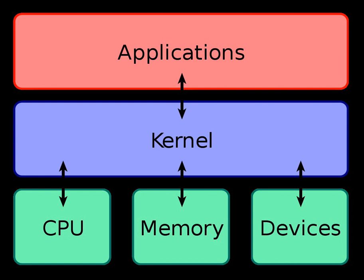The kernel has full access to the system's memory and must allow processors to safely access this memory as they require it. Often the first step is virtual addressing, usually achieved by paging and/or segmentation. Virtual addressing allows the kernel to make a given physical address appear to be another address — the virtual address. Virtual address spaces may be different for different processes, so the memory one process accesses at a particular address may differ from what another process accesses at the same address.